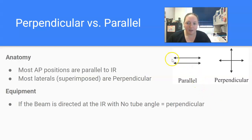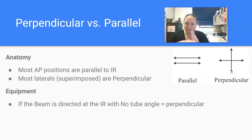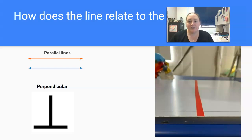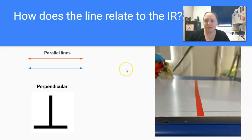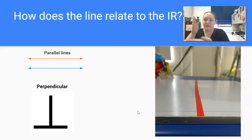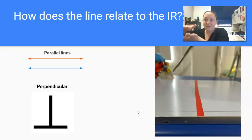Just a reminder: parallel means they're running in the same lines or in the same direction. Perpendicular, they're intersecting. And how does this line relate to your image receptor? Your image receptor is your plate, or if it's in the Bucky, the central ray or the beam coming out of your tube — is it perpendicular to the plate, parallel, or at an angle?